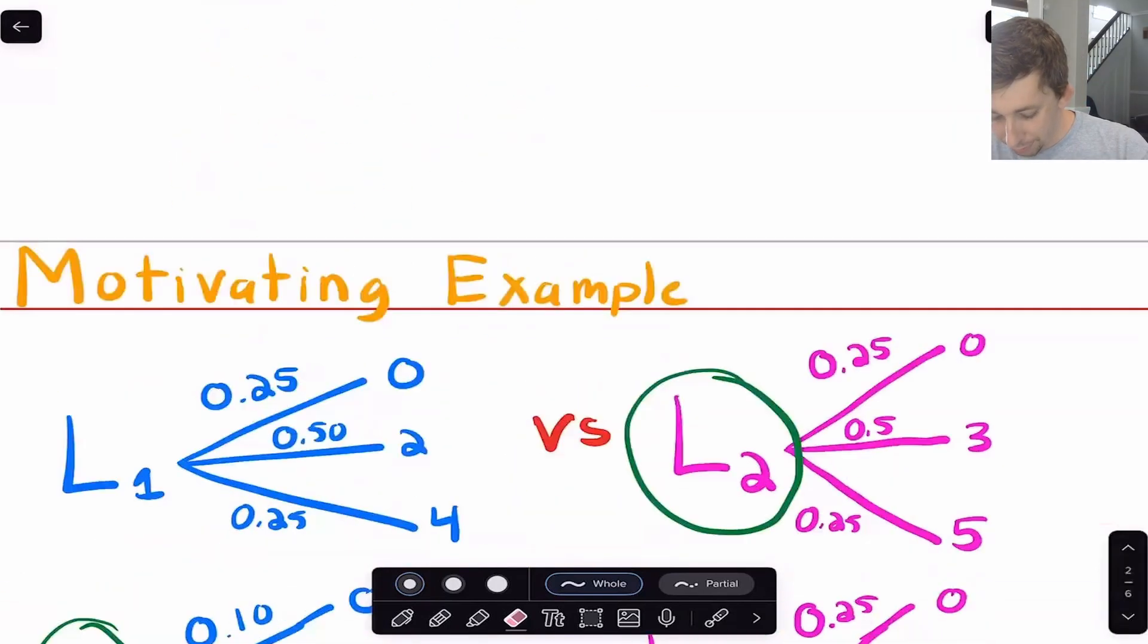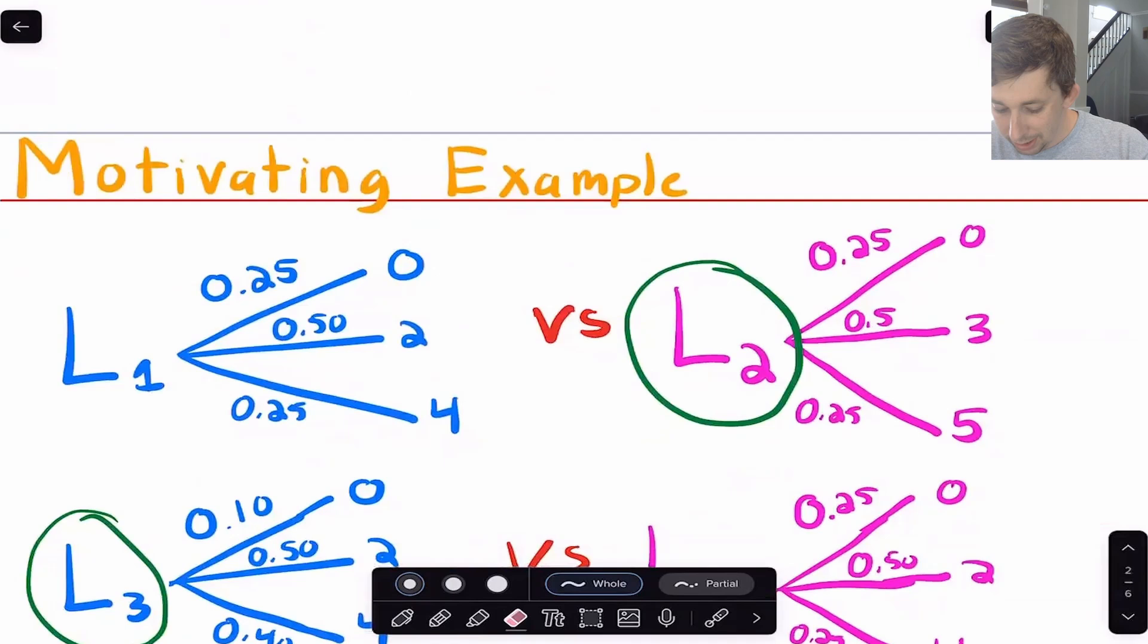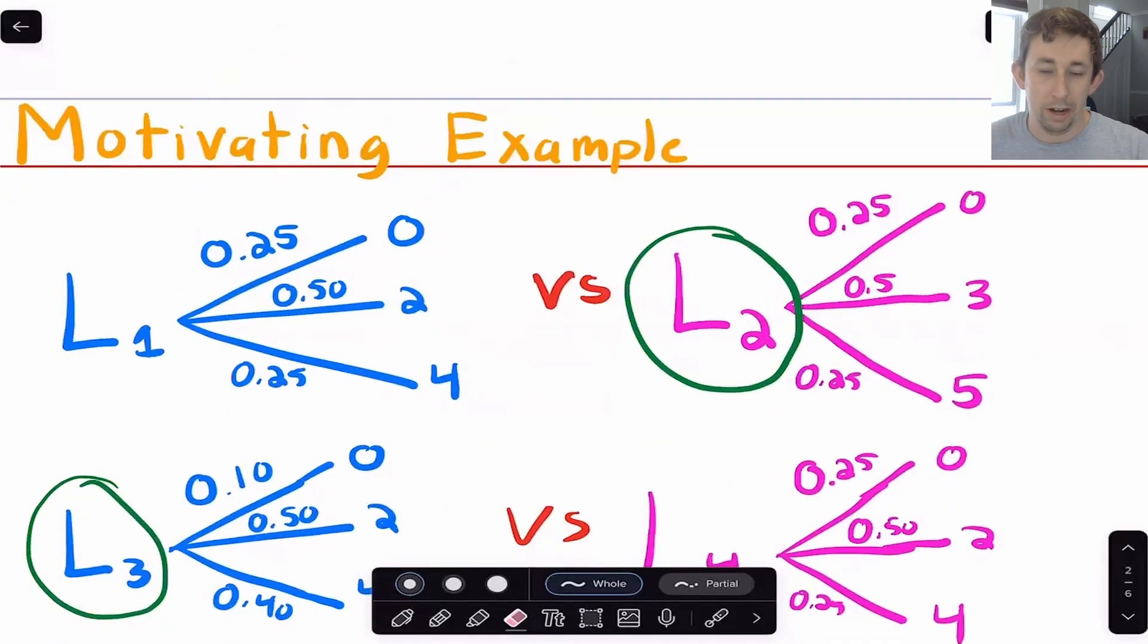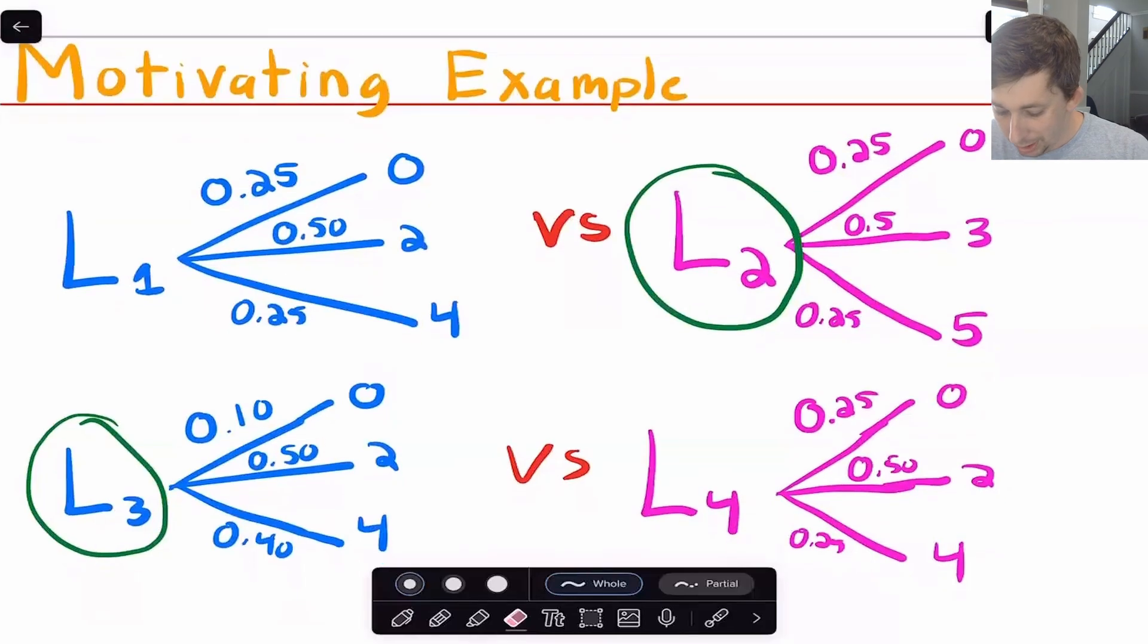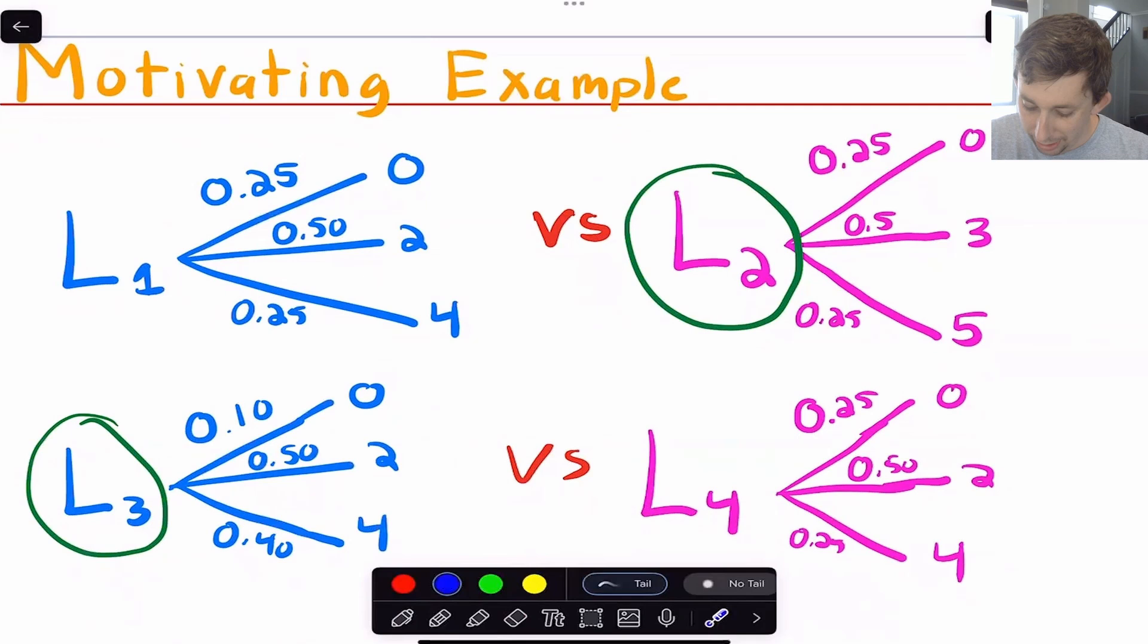So the idea behind First Order Stochastic Dominance is basically to be able to tell which lottery is preferred to another lottery. So here's a motivating example. I've got two sets of lotteries. In the first example, Lottery 1, you've got a 25% chance of 0, a 50% chance of 2, and a 25% chance of 4.